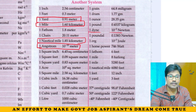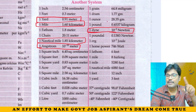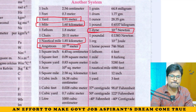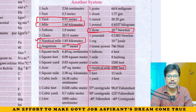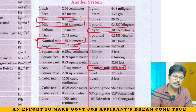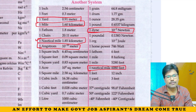One dyne is equal to 10 to the power of minus 5 newton. One nautical mile is 6080 feet. One nautical mile is 6080 feet and also 1.85 kilometers.